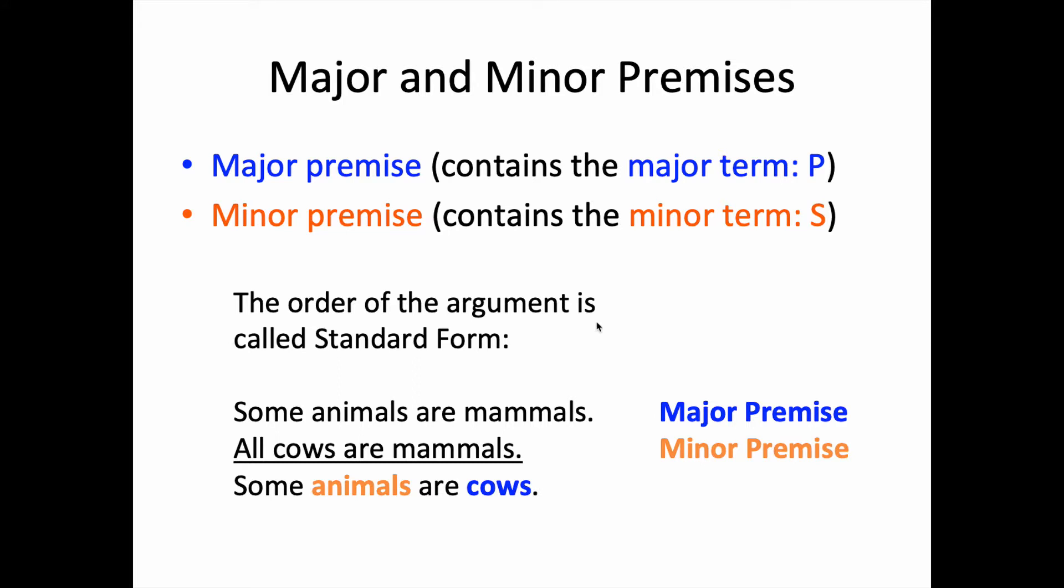The order of the argument when we have the major premise first and the minor premise second and then the conclusion is called standard form. The syllogism must be in standard form in order to be evaluated by the rules of the syllogism.